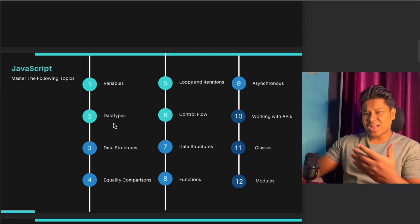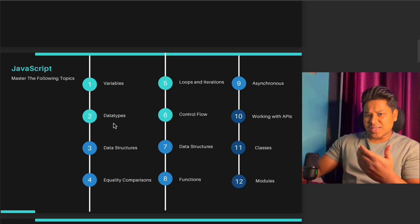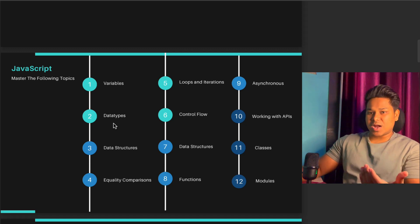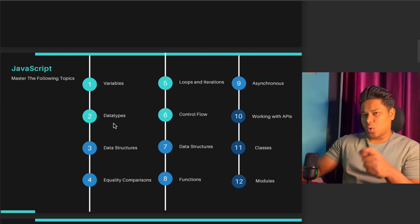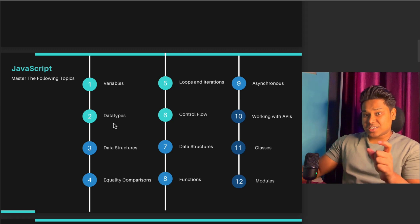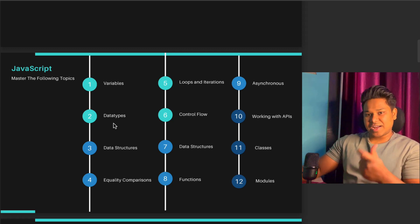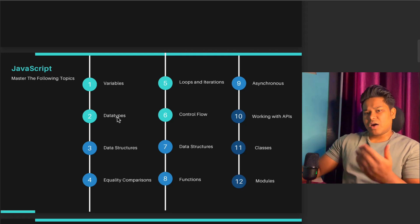Once you're done with variables, move to data types. When you go to write smart contracts and pass data into them, data types are very important — like we have uint, calldata, and string in Solidity. So you have to know what types of data types we have in JavaScript as well. Data type is the second topic.